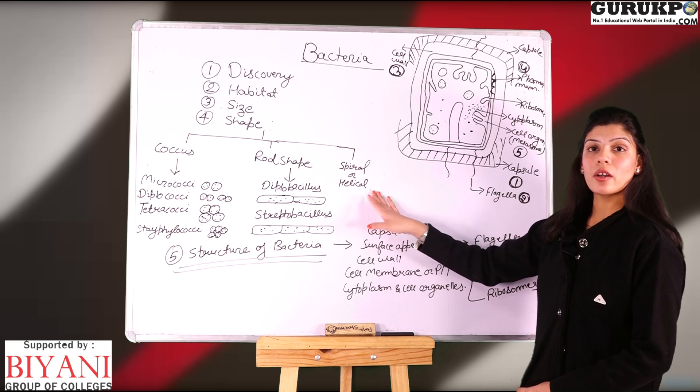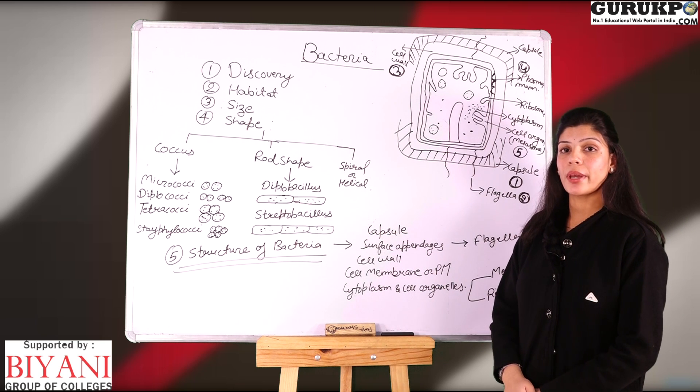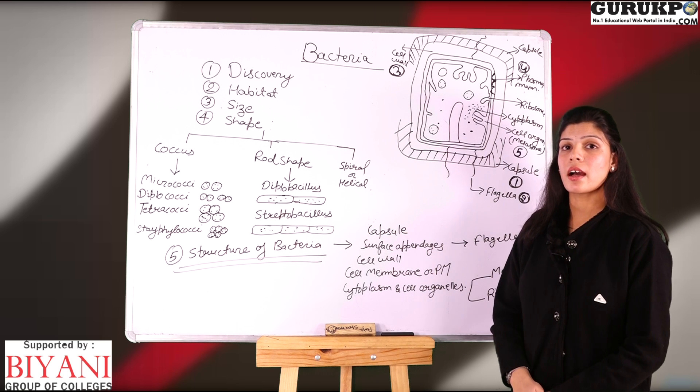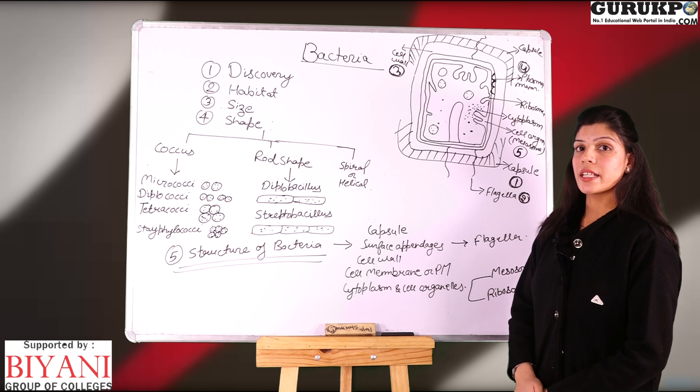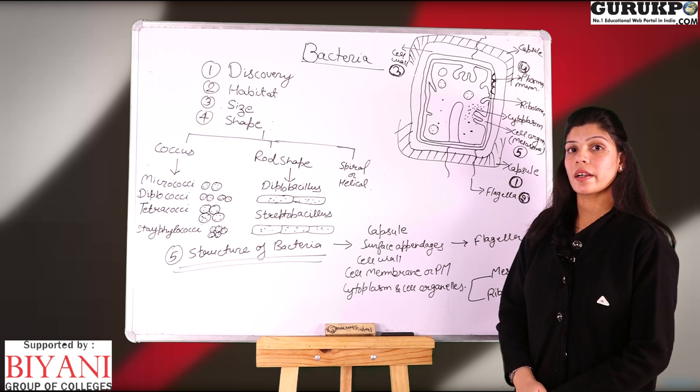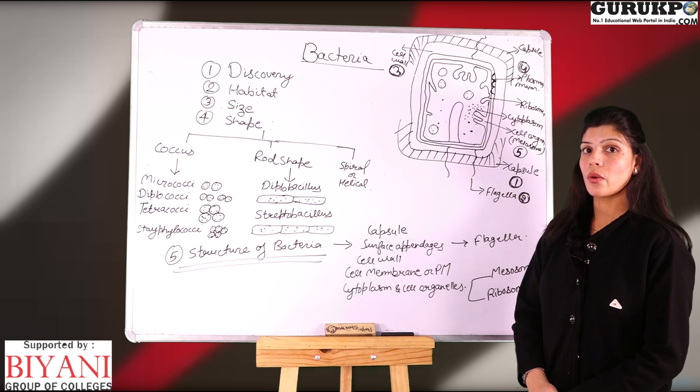Third category is the spiral or helical shape bacteria. These are comma-shaped bacteria. An example of this bacteria is Vibrio cholerae.